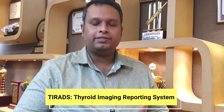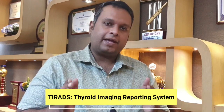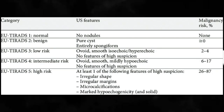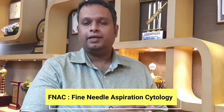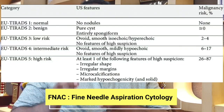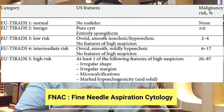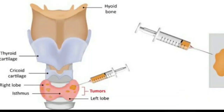If the nodule is in the high-risk or intermediate-risk category, or if it is large in size even with a low TIRADS score, we proceed to fine needle aspiration cytology — FNAC. FNAC means we insert a needle into the nodule, extract small cells, stain them, and examine for cancer cells. This is the concept of fine needle aspiration cytology.